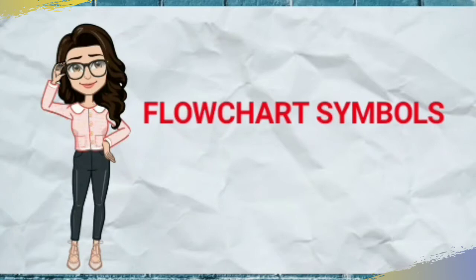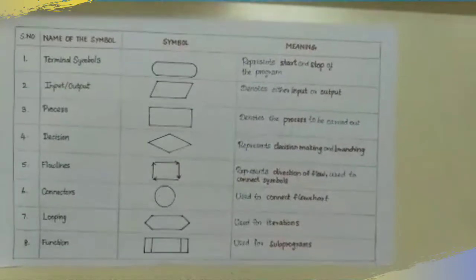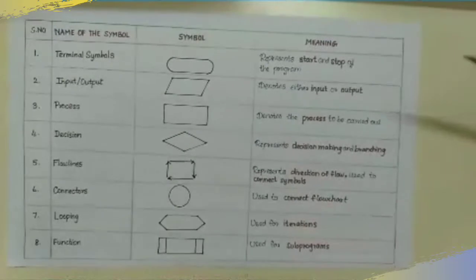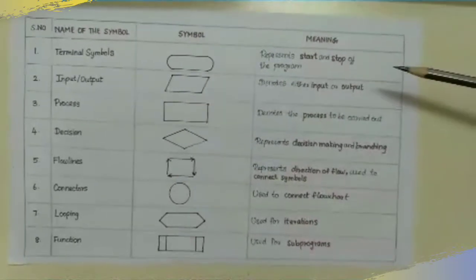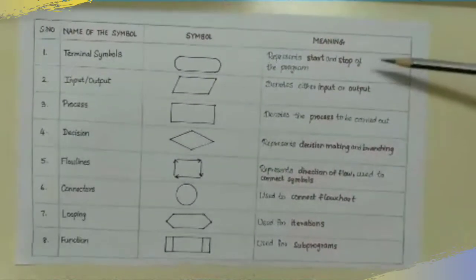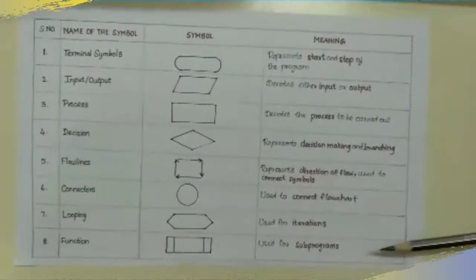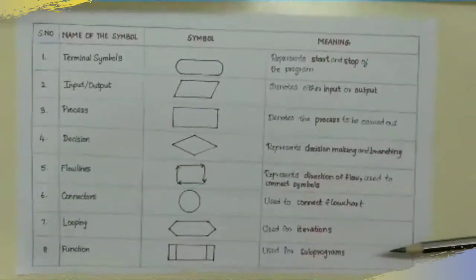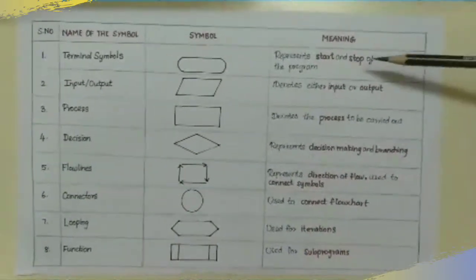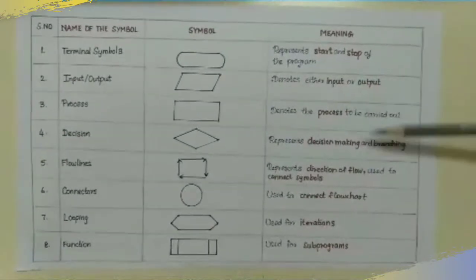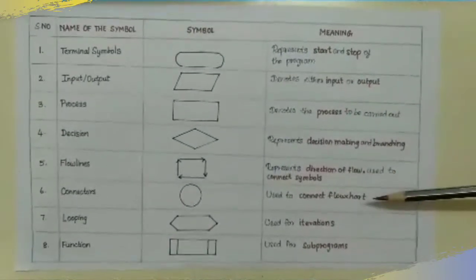Let's talk about symbols. These are the flow chart symbols. There are eight flow chart symbols. We will focus on the first six flow chart symbols.